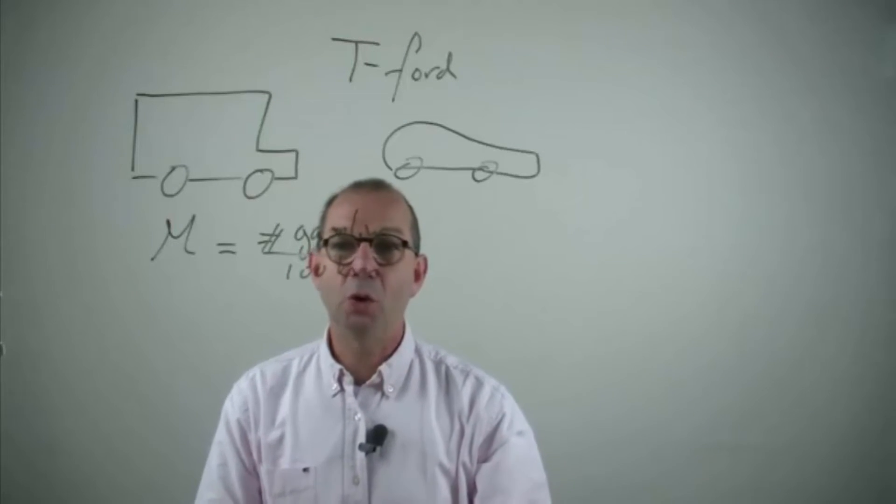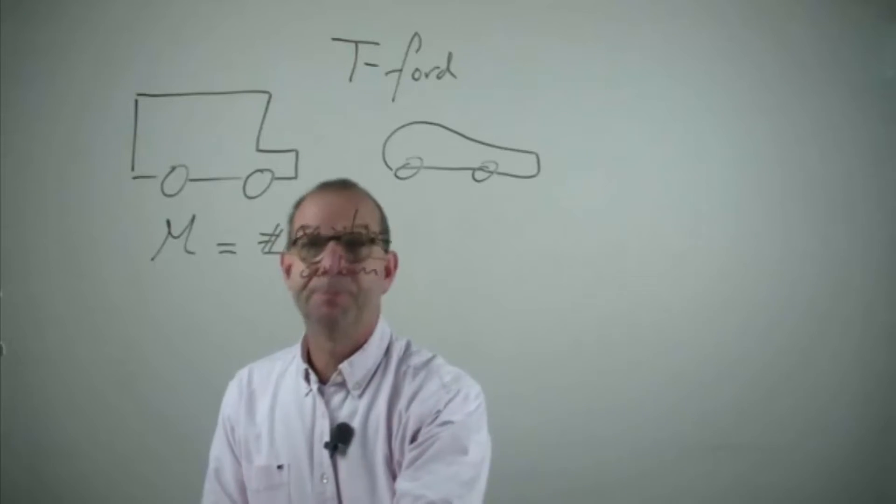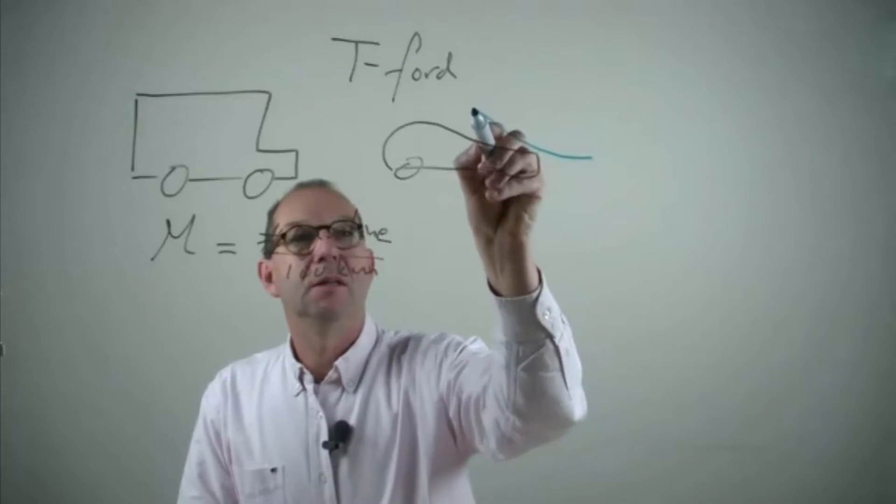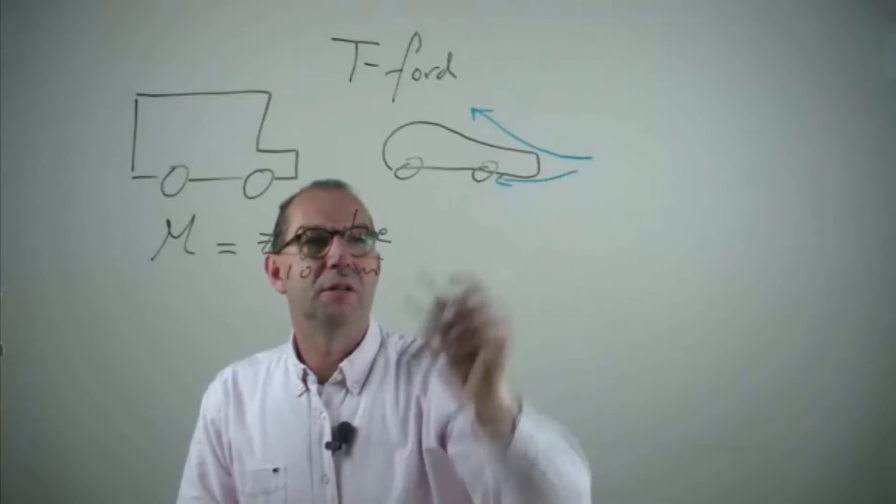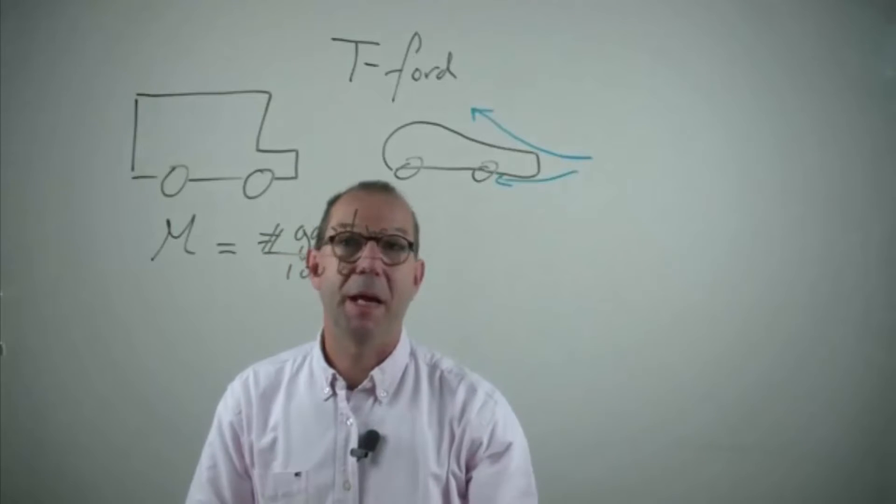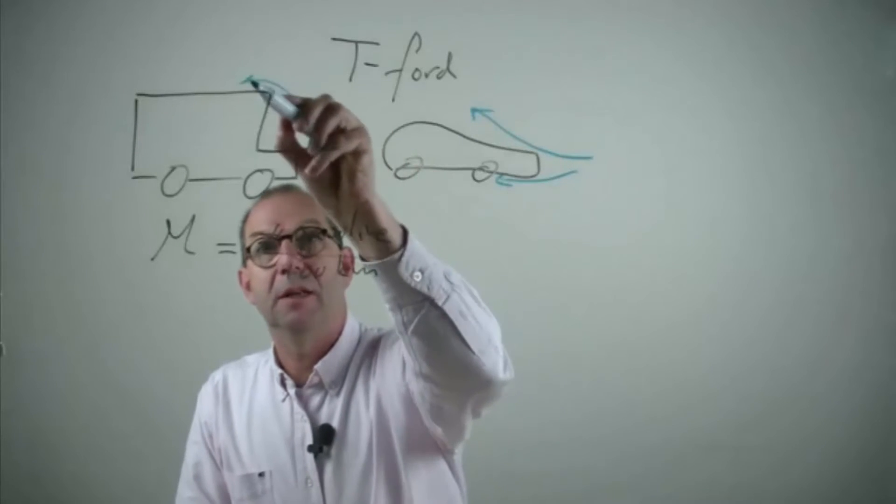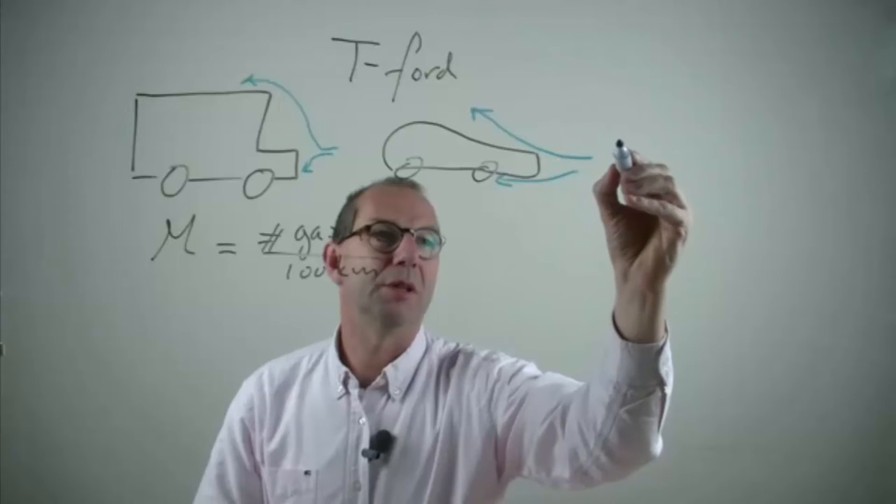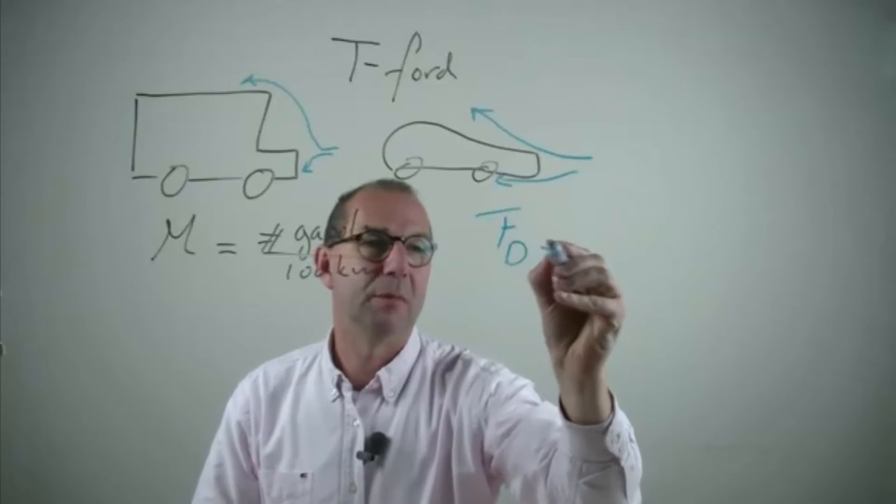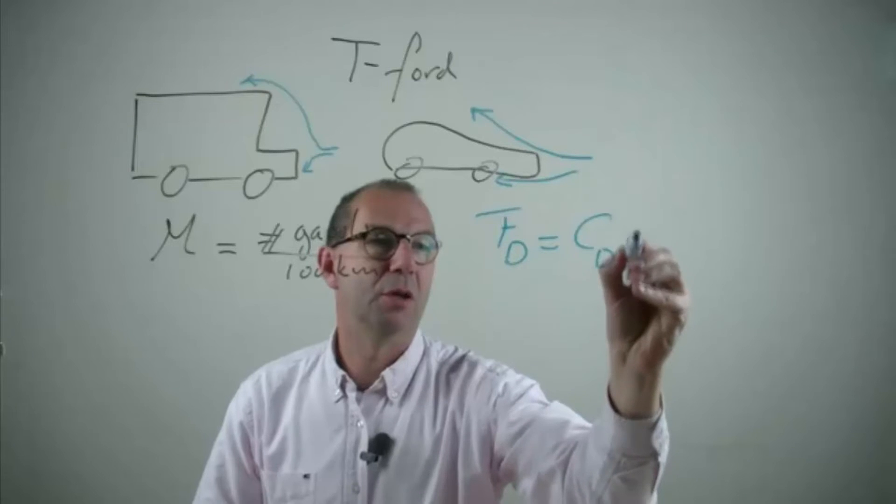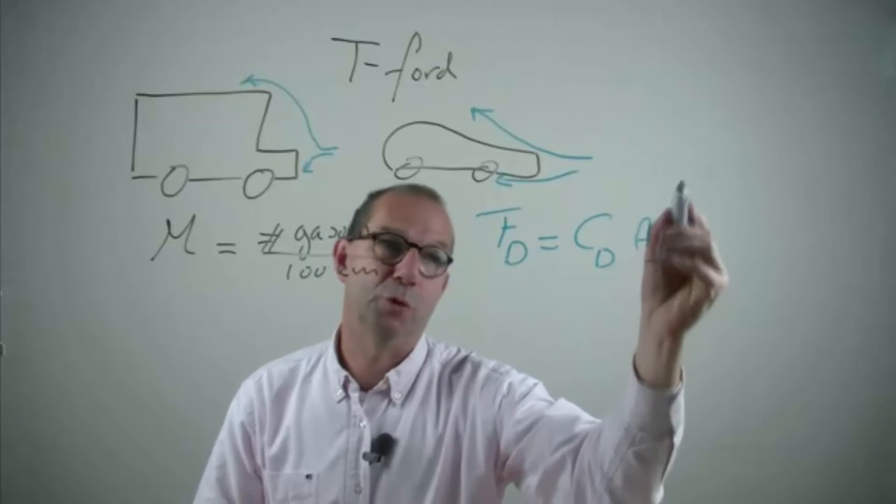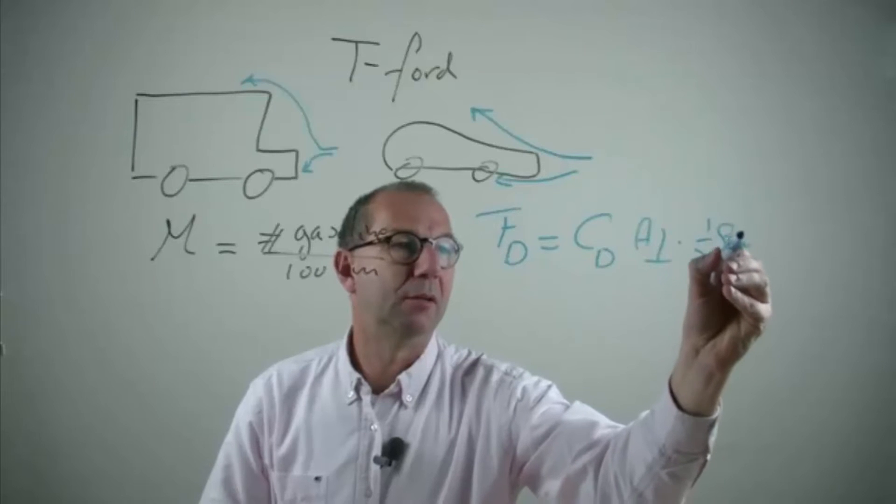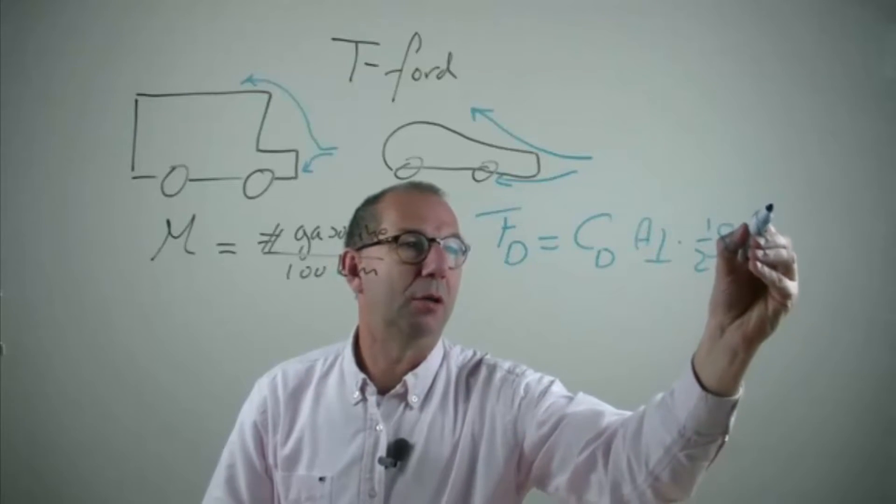If we ignore all other forces except for friction then we can make estimates. As the car is driving, the air is flowing past the car and thus the car will feel the drag force. We can model that drag force with the standard formulation: a drag coefficient, a perpendicular area, a frontal area, times half rho, v of the car squared.